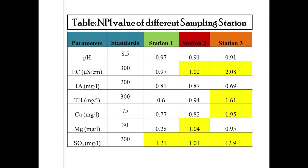Sulfate content is greater than one in all sampling stations. Based on the NPI evaluation, the highest index value was contributed by sulfate at 12.9 and electrical conductivity at 2.08, with others ranging from 1.01 to 1.95. For station one, the contributing parameter responsible for deteriorating water quality is sulfate only. For station two, the contributing parameters are electrical conductivity, magnesium, and sulfate. For station three, they are electrical conductivity, total hardness, calcium, and sulfate.